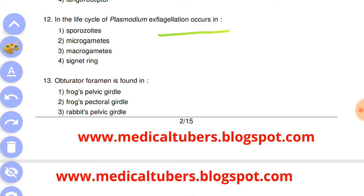Next question: obturator foramen is found in?